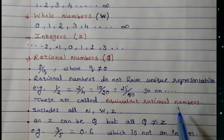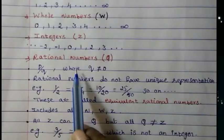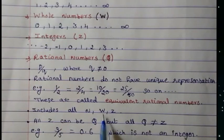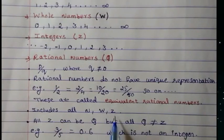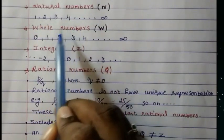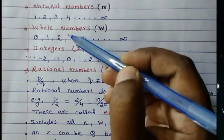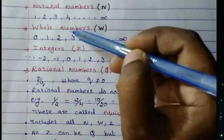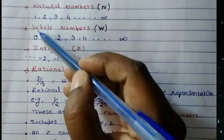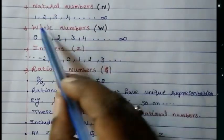Now, the unique property of rational numbers: rational numbers include all the natural numbers, whole numbers, and integers. Just have a look. Natural numbers start from 1, 2, 3, 4, and whole numbers start from 0. So all the natural numbers are contained in the whole numbers, but not all whole numbers are in the natural numbers — because 0 is not in natural numbers. Therefore whole numbers cannot be natural numbers, but natural numbers can be whole numbers because all natural numbers are included in the whole numbers.